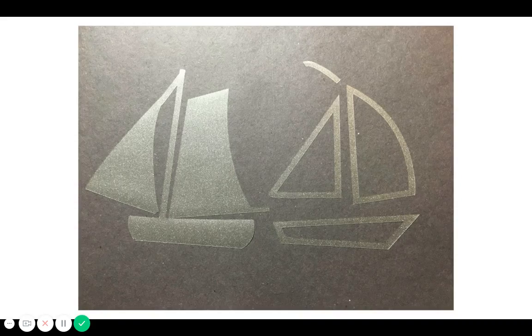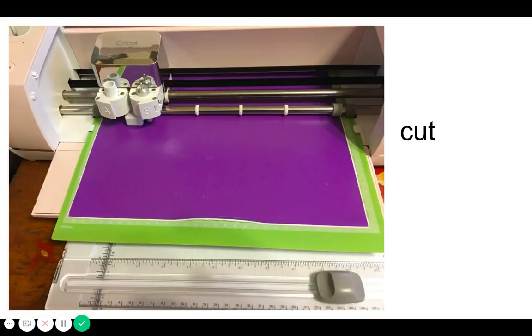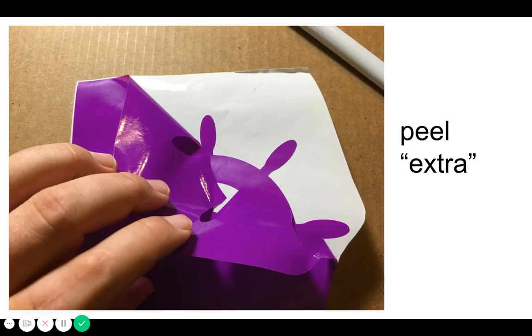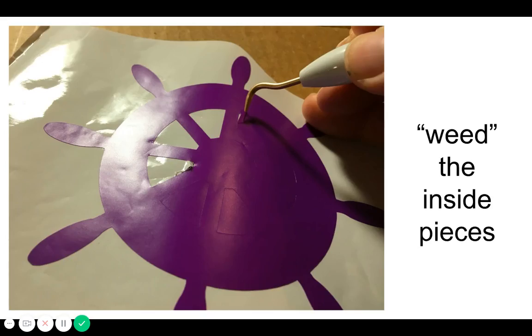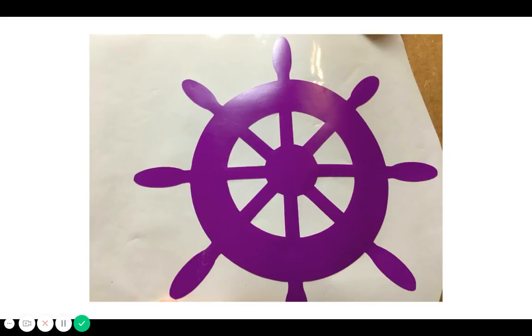That's how they came out. So you're going to cut your vinyl, you're going to peel off the extra, all the excess stuff from the outside. You can get stuff off from the inside. That's called weeding. That's what I get for my ship's wheel.